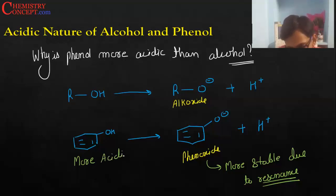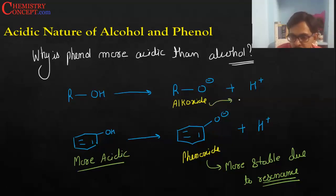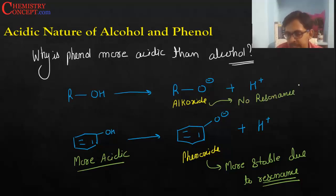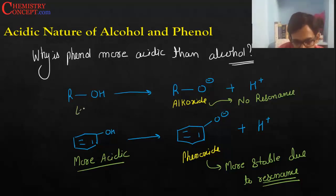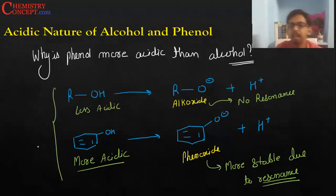Phenol is more acidic. Whereas in alkoxide ion, there is no resonance, so it is not as stable — that is why alcohol is less acidic. Please note this down, and then I'll tell you the statement which you have to write.